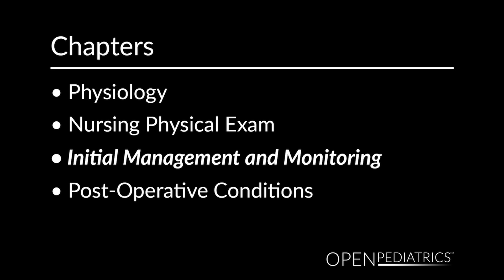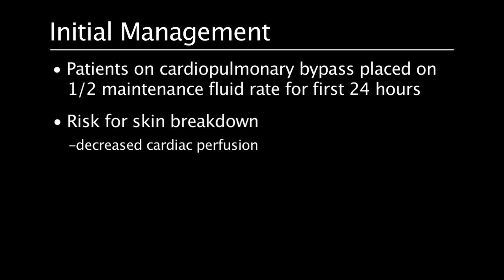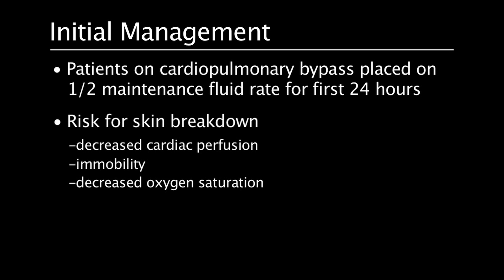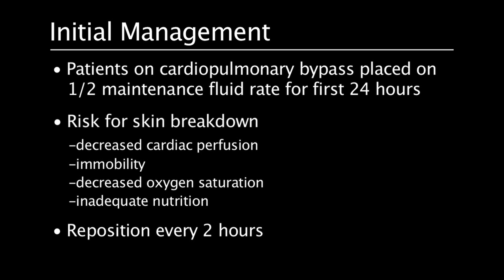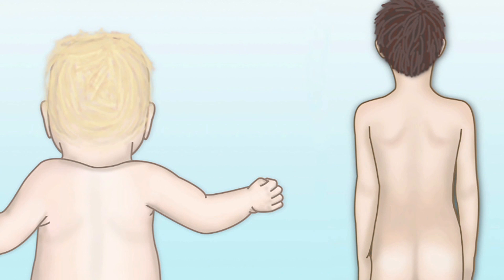Patients who are on cardiopulmonary bypass are placed on half of the usual maintenance fluids for the first 24 hours. Cardiac patients are at risk for skin breakdown because of decreased cardiac perfusion, immobility, decreased oxygen saturation, and inadequate nutrition. Patients must be repositioned every two hours to change pressure points. Infants and small children are at greater risk for pressure wounds to the back of the head or occiput, while larger patients are at greater risk for pressure-related wounds to the sacrum or lower back region.